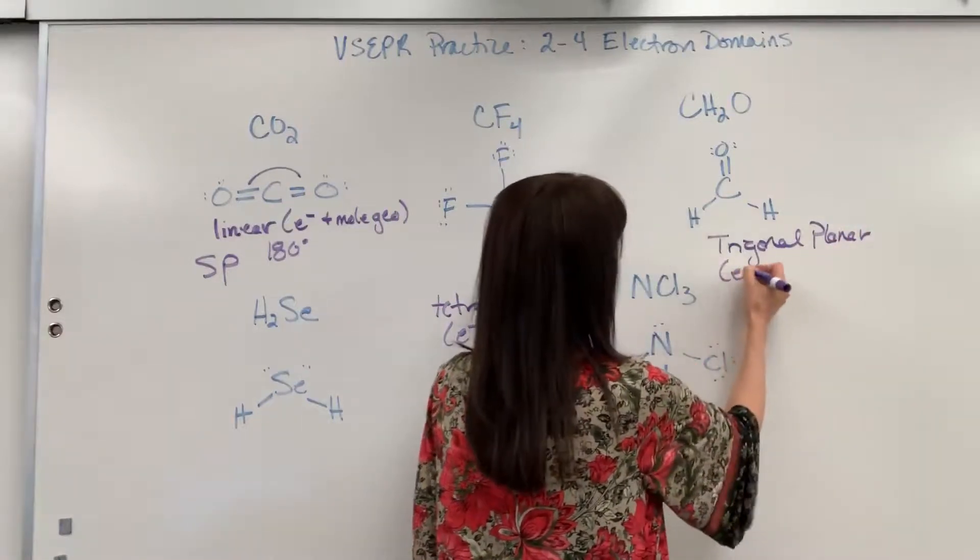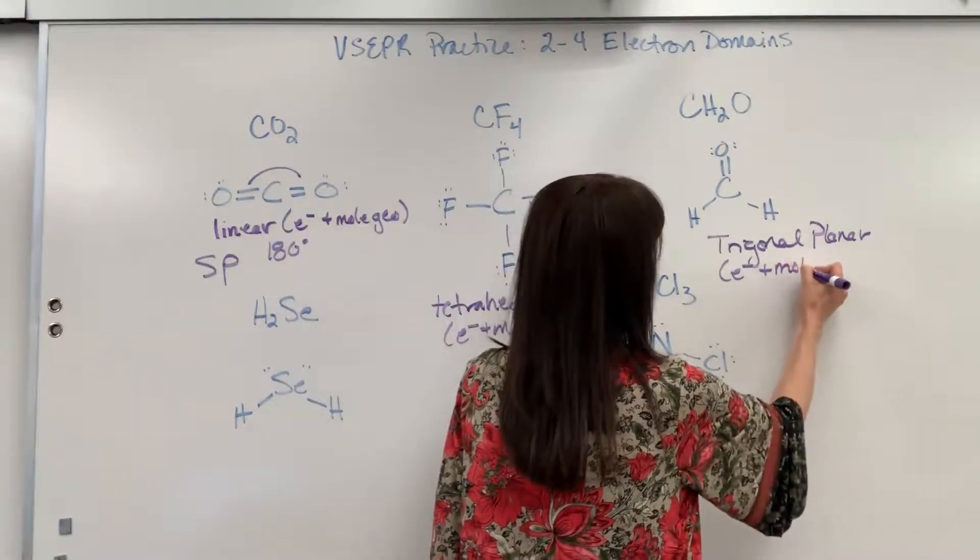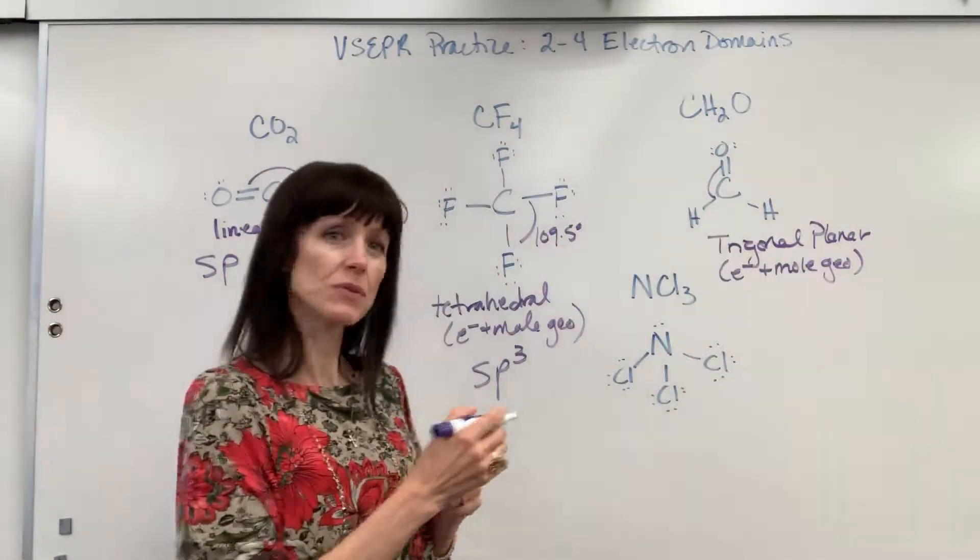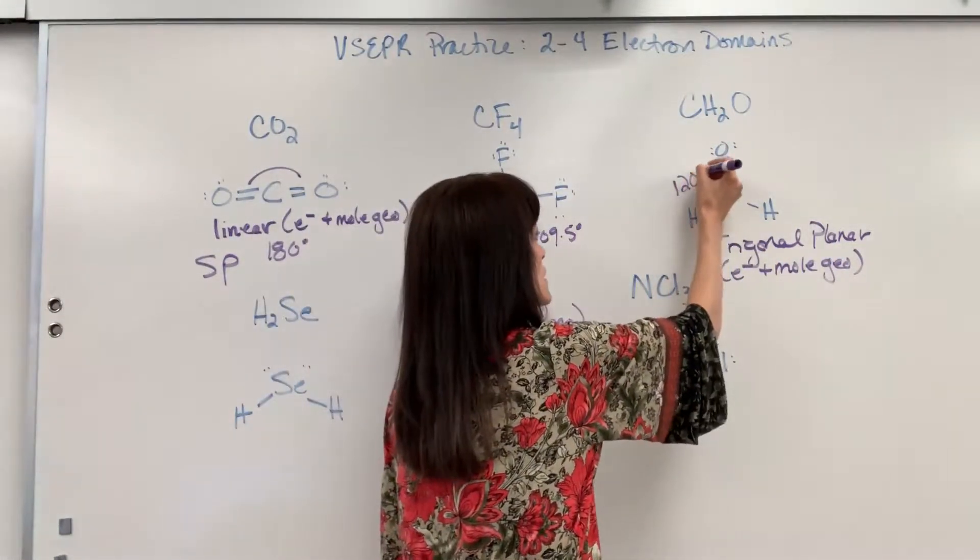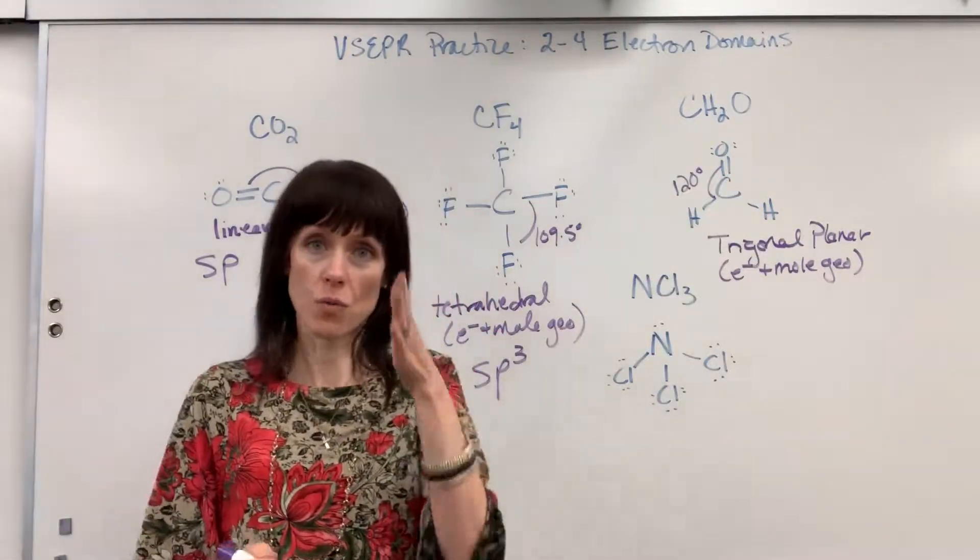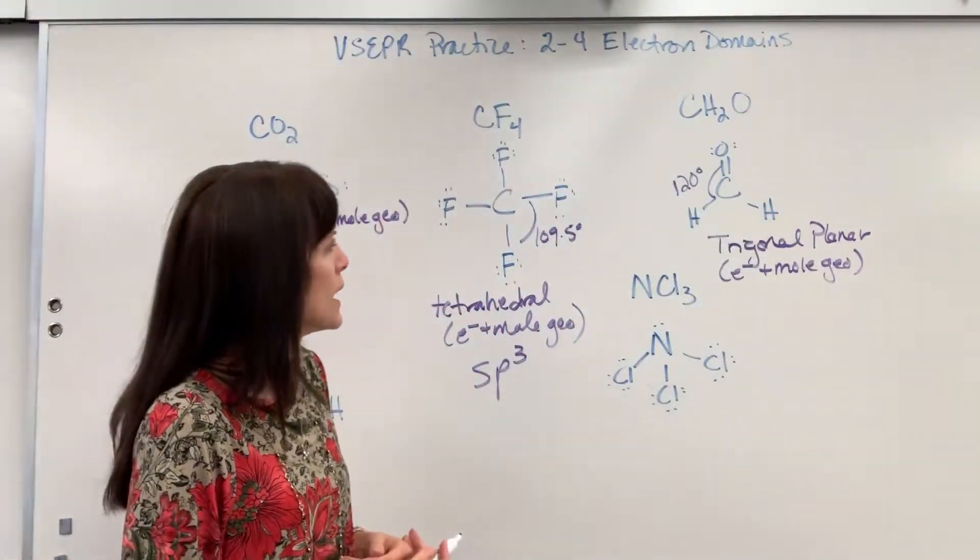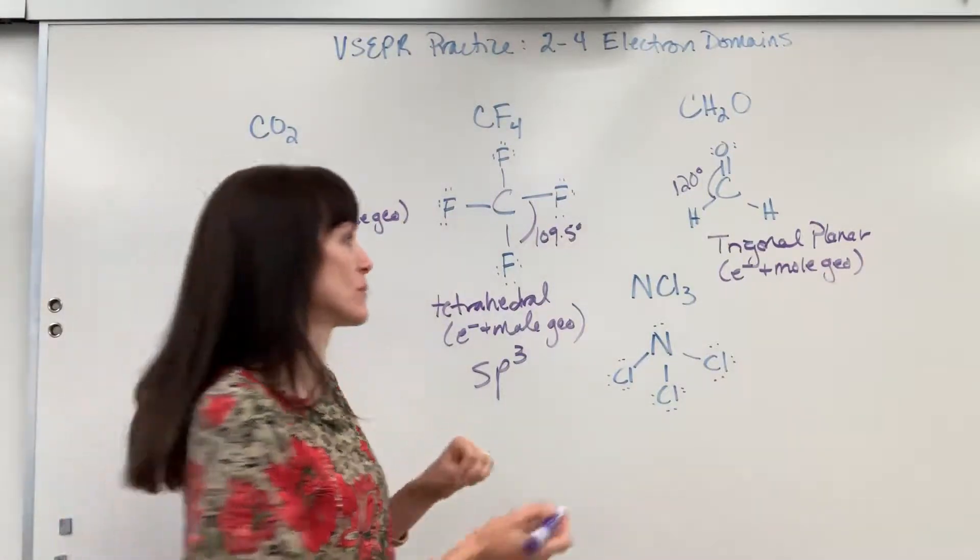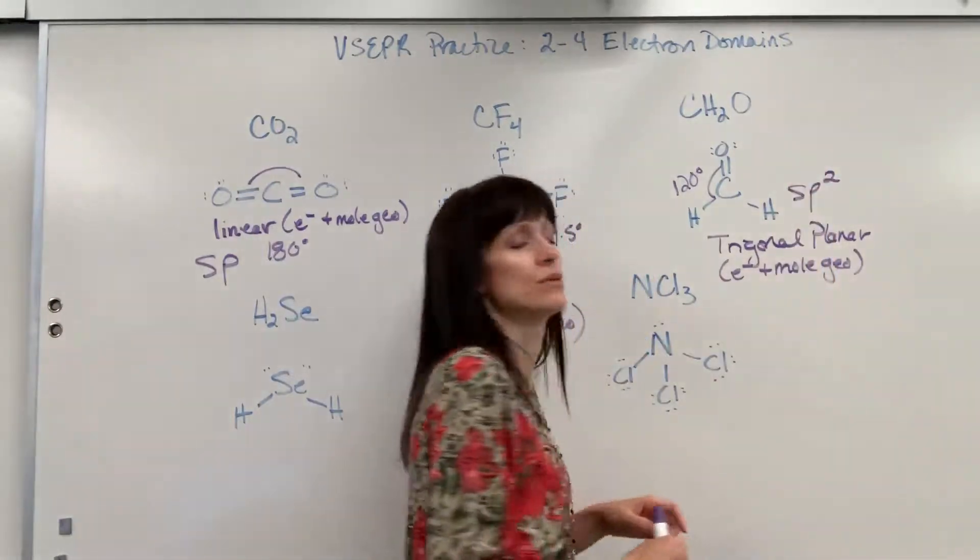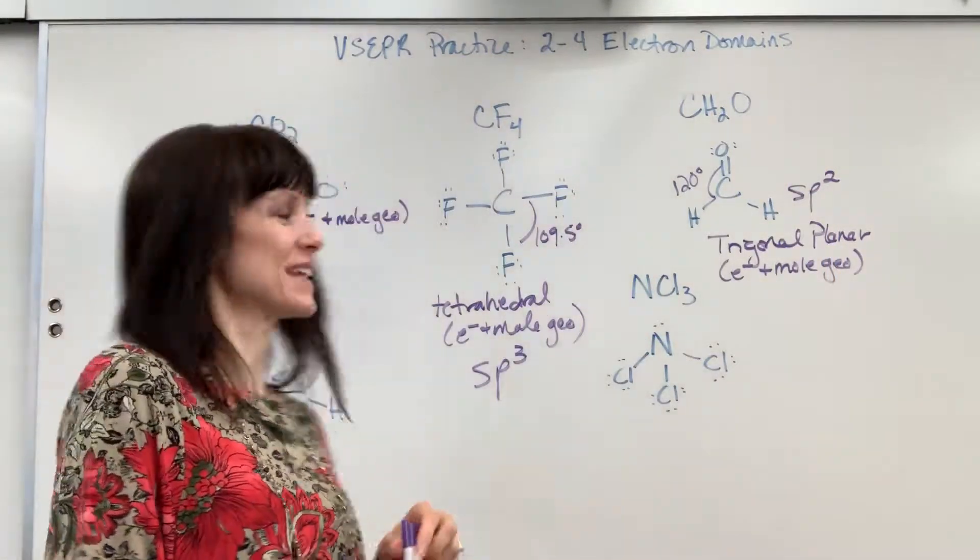Three electron domains. This is going to be trigonal planar, and of course, that's for both the electron and the molecular geometries. Maximum distance between those, 120 degrees. And on that name, it looks like a triangle and it's on one plane. Hybridization. So three electron domains is going to be SP2. One plus two gives you three.